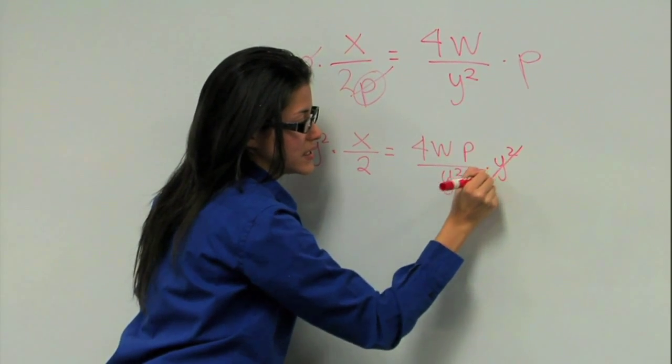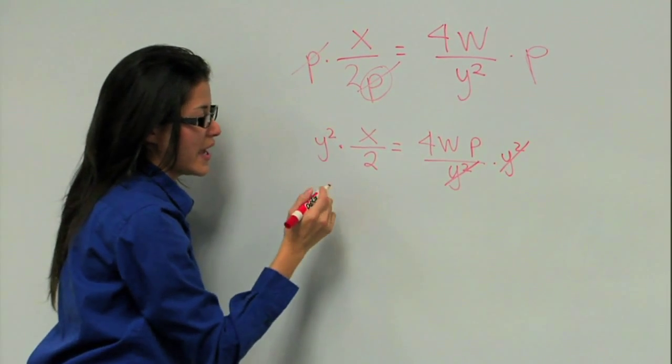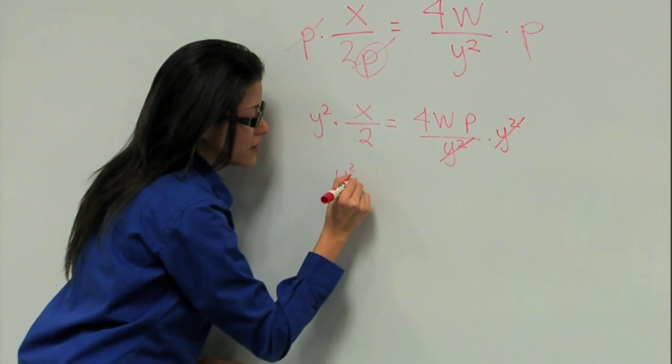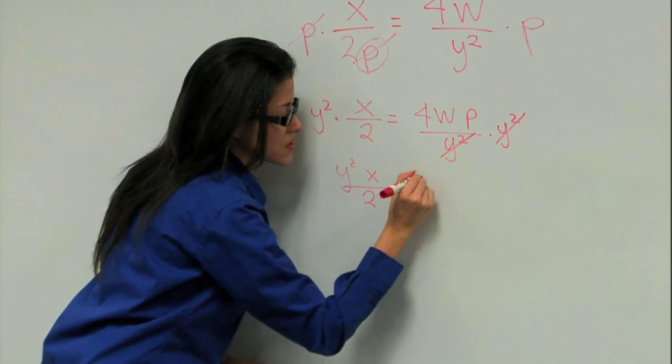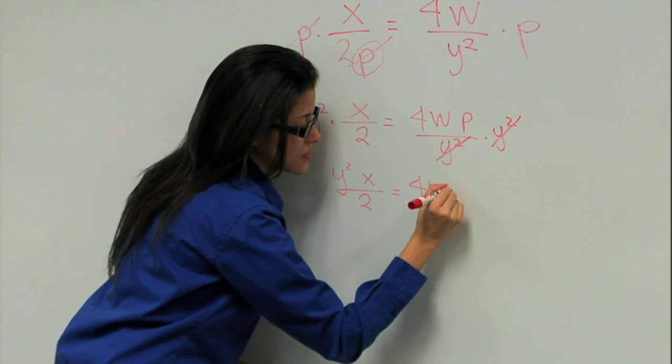So we cancel it from here. Now, rewriting this, we have Y squared times X over 2 equals 4WP.